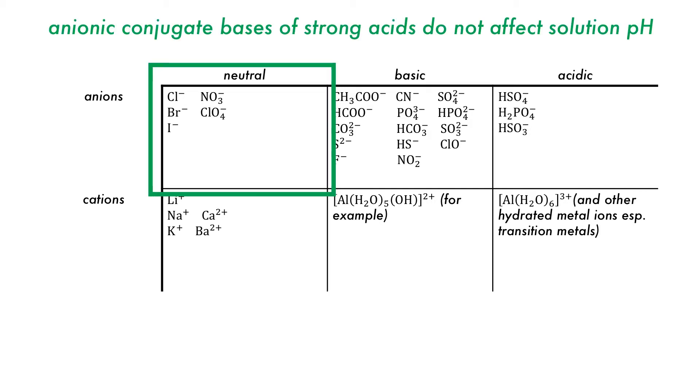Anions that are conjugate bases of strong acids, such as chloride and nitrate, have no effect on the pH of a solution.